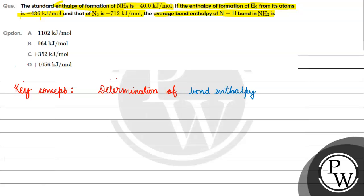The question is about the standard enthalpy of formation of ammonia. For 1 mole of ammonia, we need half mole of nitrogen gas and 3/2 moles of hydrogen gas. So the reaction is: ½N₂ + 3/2H₂ → NH₃.